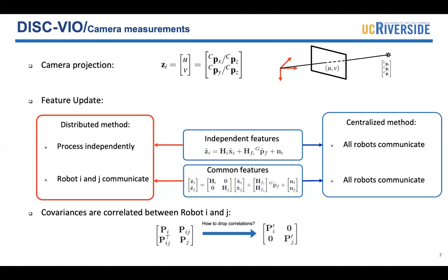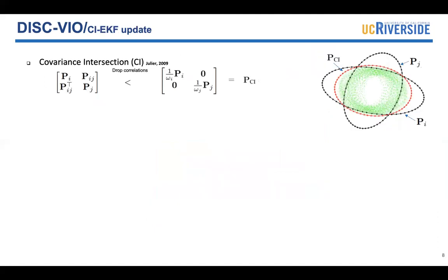But how to handle the unknown cross covariance between robots? In our method, we make use of the covariance intersection. It's a conservative update strategy.